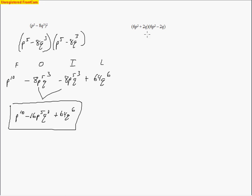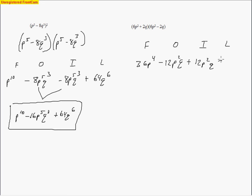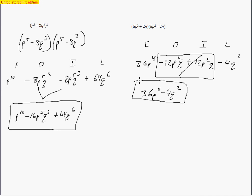One last problem — it's a sum and a difference, so the outer and inner terms are going to cancel. First terms make 36p to the fourth. Outside terms make negative 12p squared q. Inner terms make positive 12p squared q — they cancel. Last terms are opposite in sign, giving negative 4q squared. We're left with 36p to the fourth minus 4q squared. Those are the types of problems you'll see on tonight's assignment. Good luck.